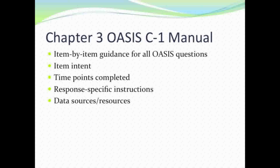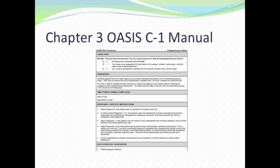Chapter 3 of the OASIS C-1 Manual provides item-by-item guidance for all OASIS questions. The item intent gives the definition behind each question. Time points show exactly which OASIS that question appears on. Response-specific instructions are the instructions for that particular question, and data sources and resources tell you where to find further information. This is available on the CMS website and everyone should download or bookmark it.